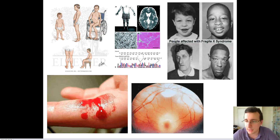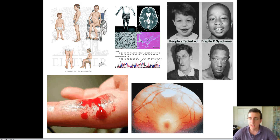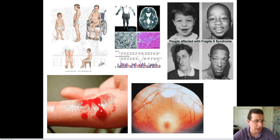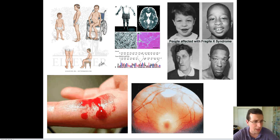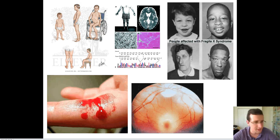Another example is McLeod syndrome, which causes degeneration of muscular and neural tissue, leading to all sorts of neurological and physiological problems among the people who have it.